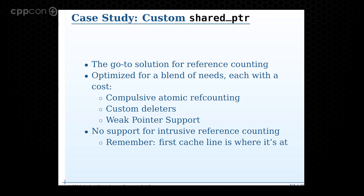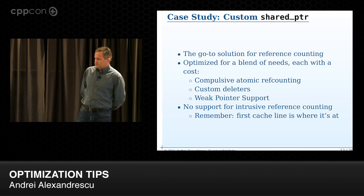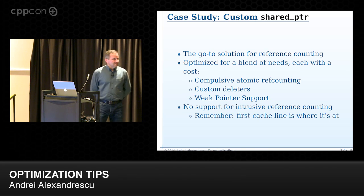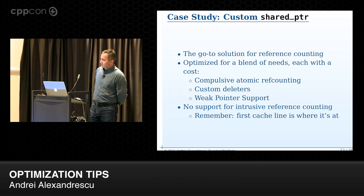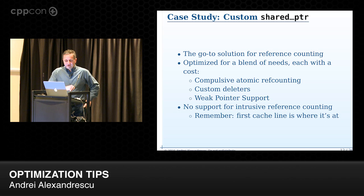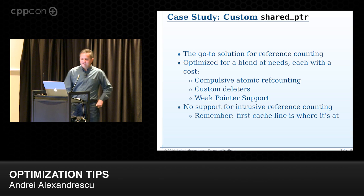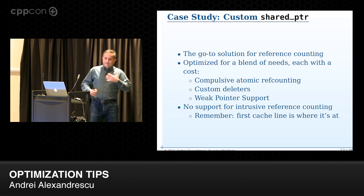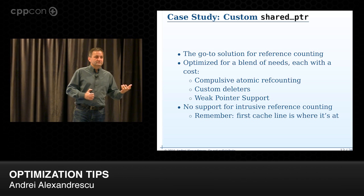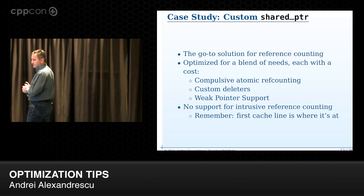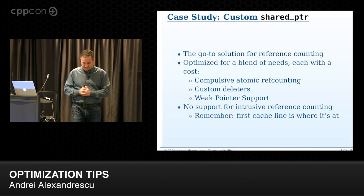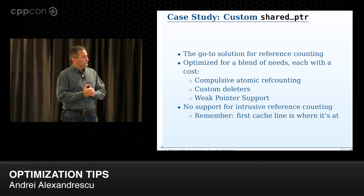Now I'll discuss construction/destruction/inlining issues through a case study: a user-defined shared pointer. Shared_ptr is the obvious solution to reference counting, optimized for a blend of needs: atomic reference counting for thread-sharing, custom deleters, weak pointers for cycle-breaking. But there's no support for intrusive reference counting, which is a bad thing for large applications.